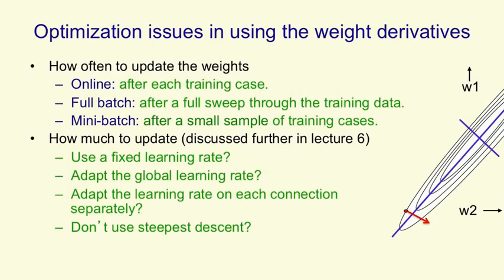If you look at the figure on the right, when we had a very elongated ellipse, the direction of steepest descent is almost at right angles to the direction to the minimum that we want to find. And this is typical, particularly towards the end of learning, of most learning problems. So there's much better directions to go in than the direction of steepest descent. The problem is, it's quite hard to figure out what they are.